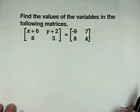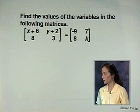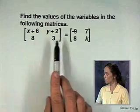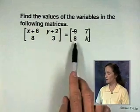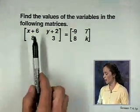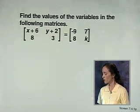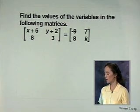Two matrices are said to be equal if their corresponding elements are equal. Here's an example. What we want to do is find the values of the variables in the matrices. Notice that I have two matrices set equal to each other. In order for these to be equal, X plus 6 has to be negative 9, and so on. Let's find the values of the variables.